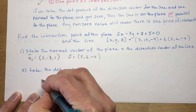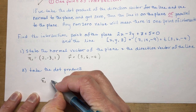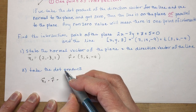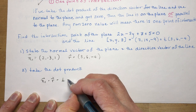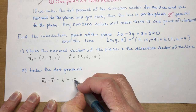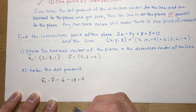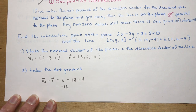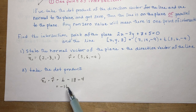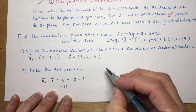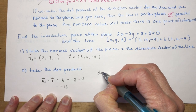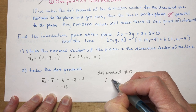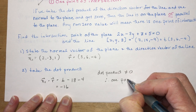I take the dot product of the normal vector with the direction vector of the line. I get 6 minus 18 minus 4, which is obviously not equal to zero. So the dot product is not equal to zero; therefore, there is one point of intersection.